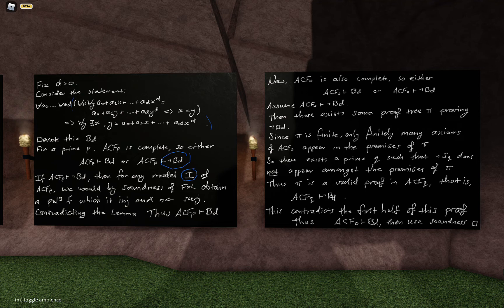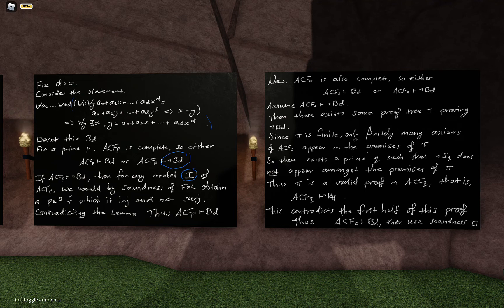Regarding the introduction of D: metatheoretically, this proof holds for arbitrary D greater than 0. So you can go back to the statement of the corollary and change it to: let K be an algebraically closed field and let F from K^n to K^n be a degree D polynomial. Assume ACF_p and ACF_0 are complete. If F is injective, then it is surjective. I've proven that for all D greater than 0, and a polynomial in a single variable has some degree, so I've covered all polynomials. That's how it extrapolates out to the entire corollary.